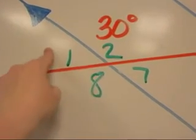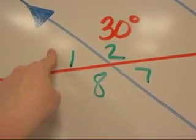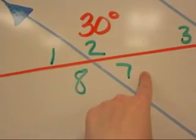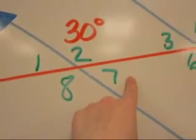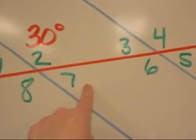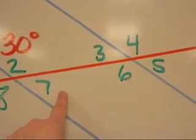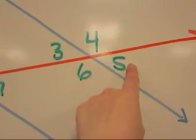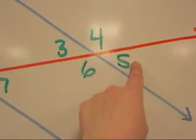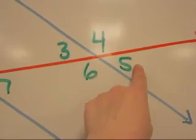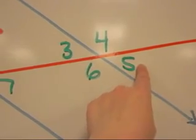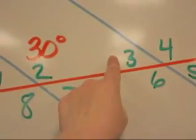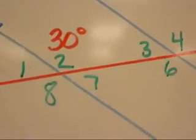If angle 1 is 150 degrees, its vertical angle is 150 degrees. If that angle is 150 degrees, its corresponding angle is 150 degrees. And if that angle is 150 degrees, its vertical angle is 150 degrees. It's easy to find missing angle measurements.